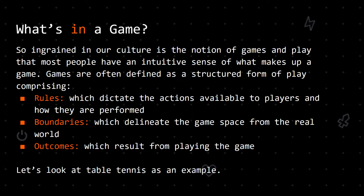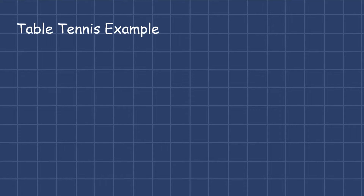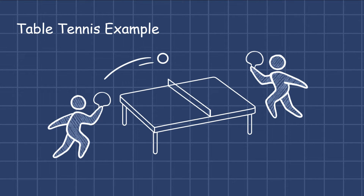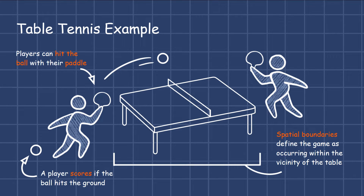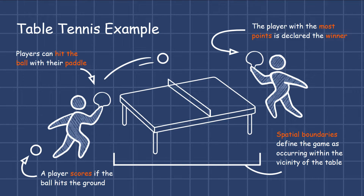Let's look at table tennis as an example. As an oversimplification, the rules of the game specify that players can hit the ball with their paddle, and a player scores if their opponent fails to return a volley before the ball hits the ground. Spatial boundaries define the game as occurring within the vicinity of the table, and the outcome of a match is such that the player with the most points is declared the victor.